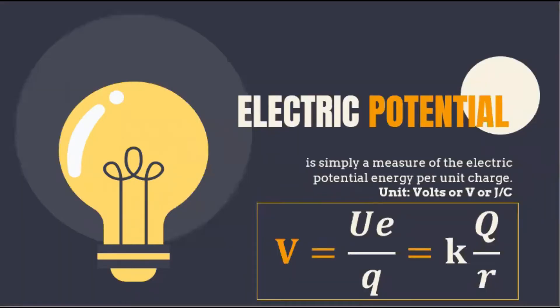Next we have electric potential. Electric potential is simply a measure of electric potential energy per unit charge. In layman's terms, we know it as voltage, and the unit for voltage is volts or joules per coulomb. Given the equation, V equals Ue over charge, which is also equal to K multiplied by the magnitude of our point charge divided by the distance R.